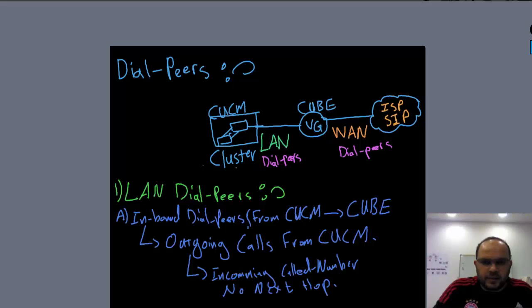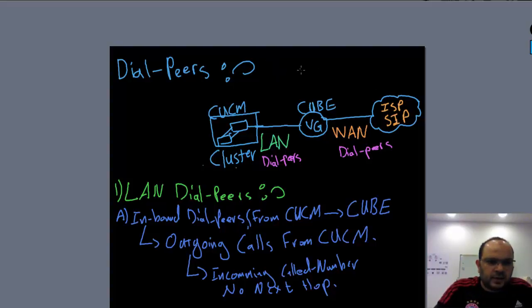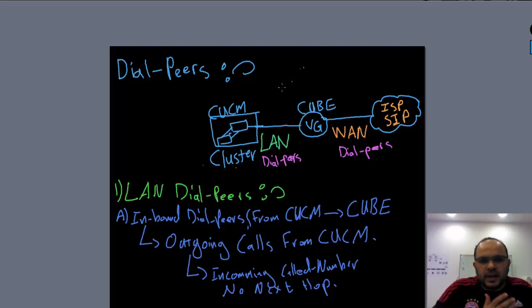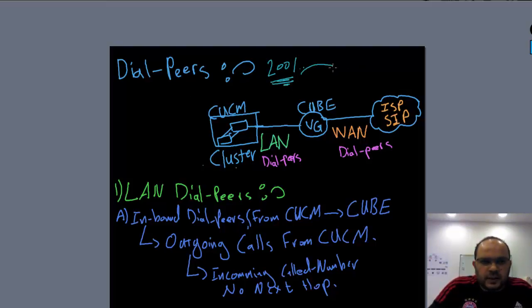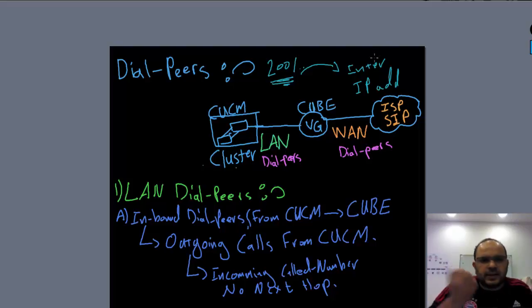Let's get started with dial peers. What is a dial peer? A dial peer is actually like a static routing table. If you remember, in a routing table there is an IP address range and a next hop. It's the same concept — matching the dial number or digits and looking for which IP address or which interface to send it to. For example, if I have extension 2001, I create the dial peer, match this number, then send it to a session target IP address.